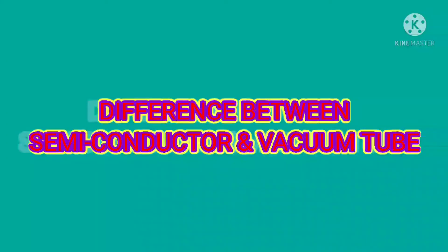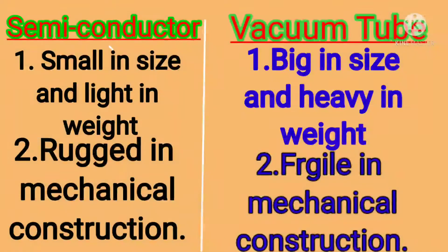Difference between Semiconductor and Vacuum Tube. Semiconductor and Vacuum Tube difference kya hai. Point 1: Semiconductor is small in size and light in weight, whereas Vacuum Tube is big in size and heavy in weight.